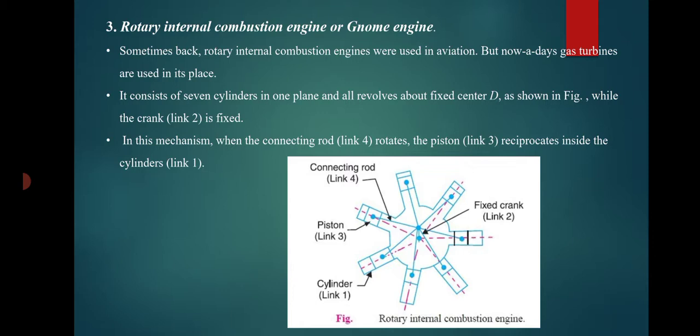The rotary internal combustion engine consists of seven cylinders in one plane. All cylinders revolve around a fixed center D, as shown in the figure, while the crank is linked to a fixed point.